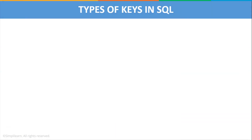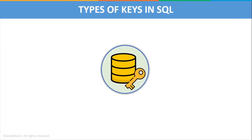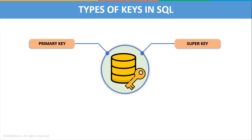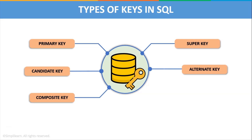Now that we have understood what SQL keys are and why we use them, let us discuss some of the various types of keys in SQL. SQL keys are broadly classified into various types such as primary key, super key, candidate key, alternate key, composite key, and foreign key. Let us discuss each and every type of key in detail with an example.